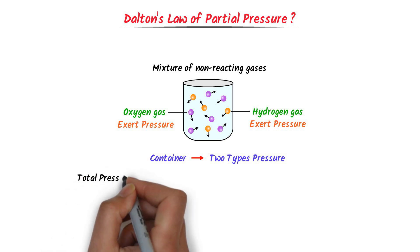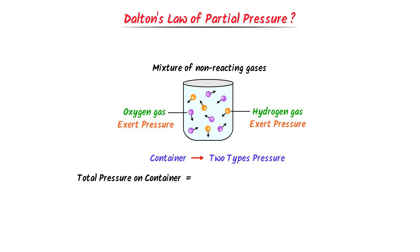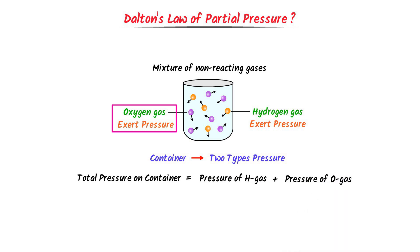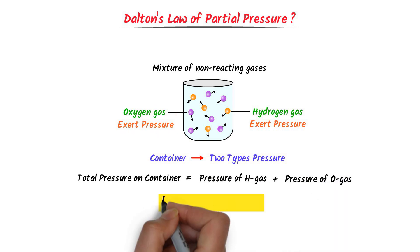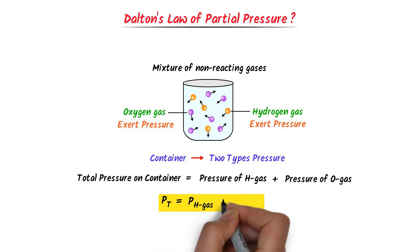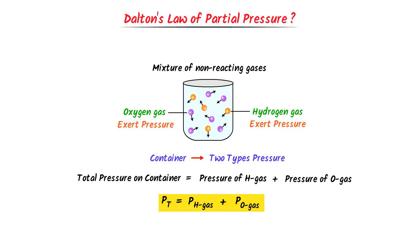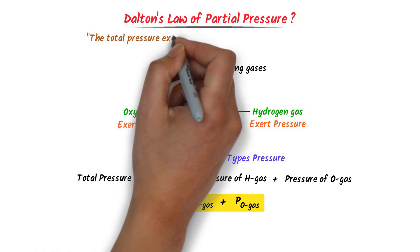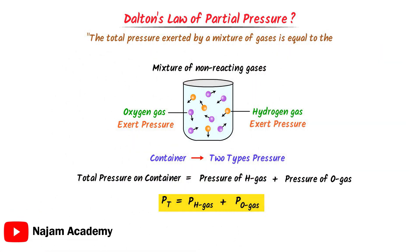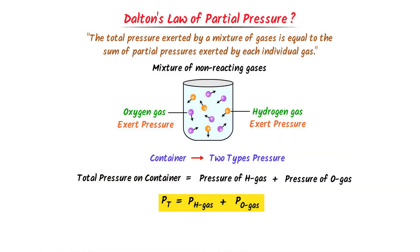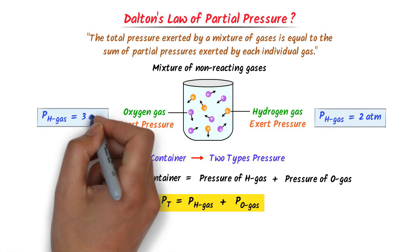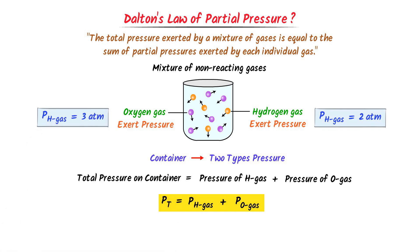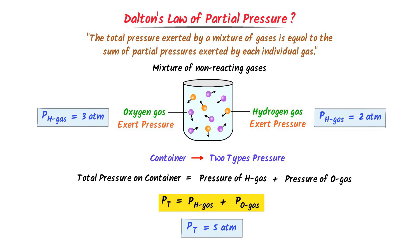What is the total pressure on the wall of the container? The answer is simple. The total pressure on the walls of the container is equal to pressure of hydrogen gas plus pressure of oxygen gas. Or we write: total pressure Pt is equal to pressure of hydrogen gas plus pressure of oxygen gas. Therefore, we define Dalton's Law of Partial Pressure as: the total pressure exerted by a mixture of gases is equal to the sum of the partial pressures exerted by each individual gas. For example, let hydrogen gas exert 2 atmospheric pressure and oxygen gas exert 3 atmospheric pressure. Then, according to Dalton's Law, the total pressure is equal to 2 plus 3 equals 5 atmospheric pressure.